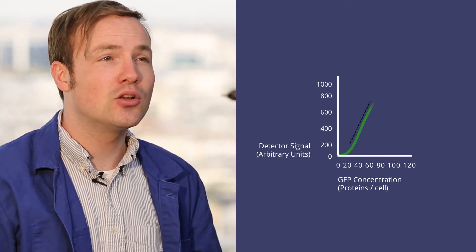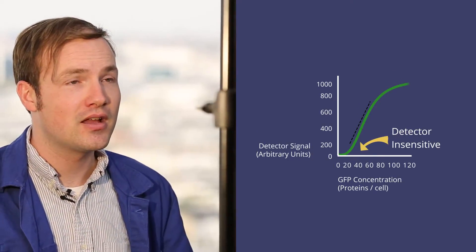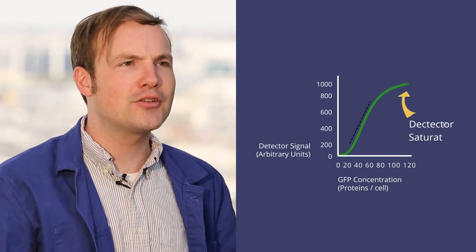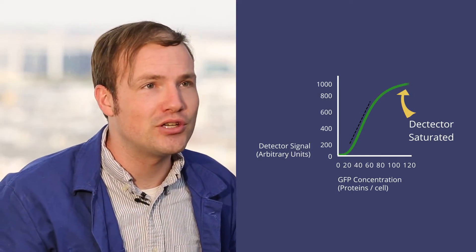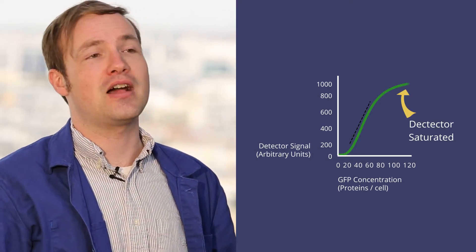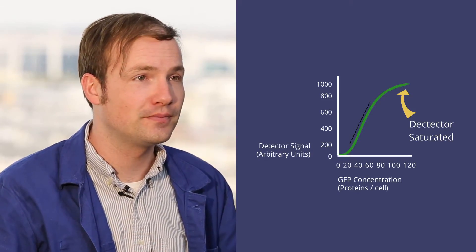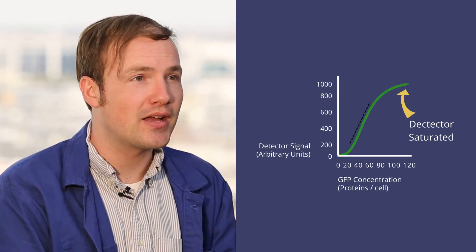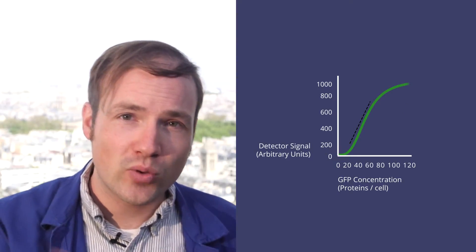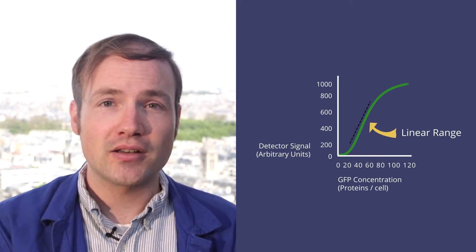Imagine that I loaded only a very small number of cells onto the machine — fewer than it could detect. I might get a value of 0 for the experiment and 0 for the control. Or imagine that I crammed the machine full of cells, enough to completely saturate the detector. I might get 1000 for the experiment and 999 for the control. We need to be working in a sweet spot where the machine is sensitive but not saturated — a place where 25 times the fluorescence really means 25 times the signal.